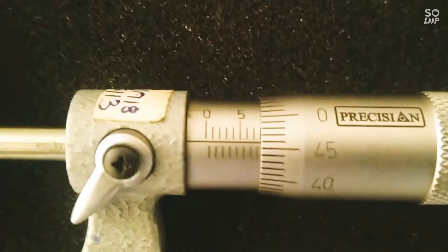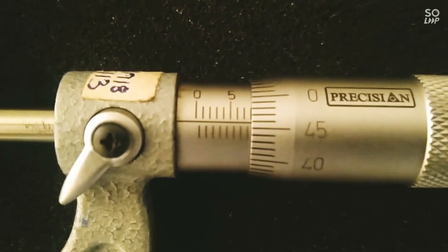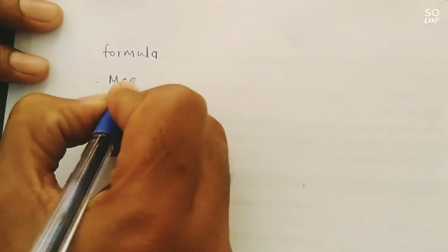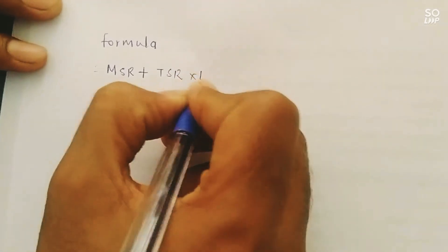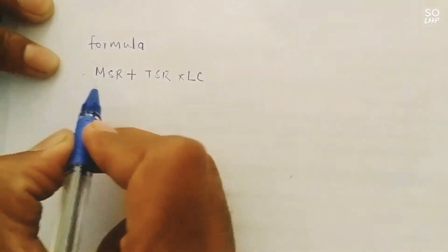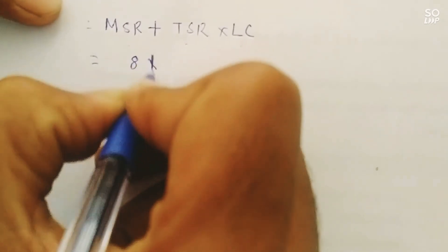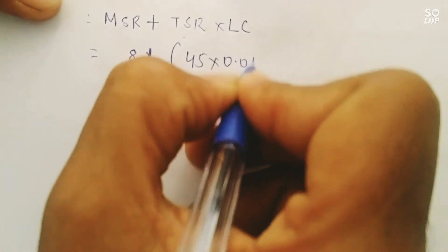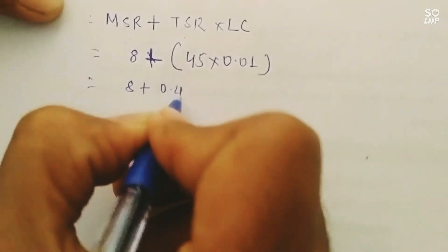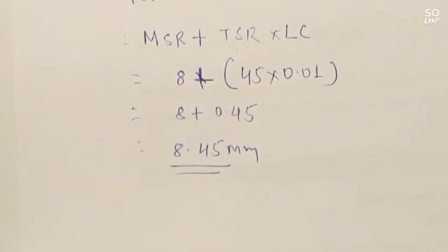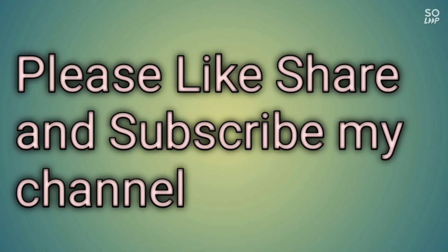Now look at the main scale reading: it is 8 mm. On the thimble scale, the reading is 45. Using the formula — main scale reading plus thimble scale reading multiplied by least count — we get: 8 + (45 × 0.01) = 8 + 0.45 = 8.45 mm. In this way we can take a reading with the help of a micrometer.